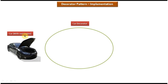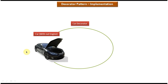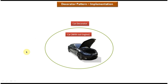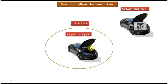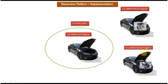On the left side you can see a car — it doesn't have any engine. Suppose I want to add a petrol engine or a diesel engine to this car. What I have to do is introduce a car decorator. If I want a car with a petrol engine, the car decorator will add a petrol engine and return a car with a petrol engine. If I want a diesel engine, the car decorator will add a diesel engine.